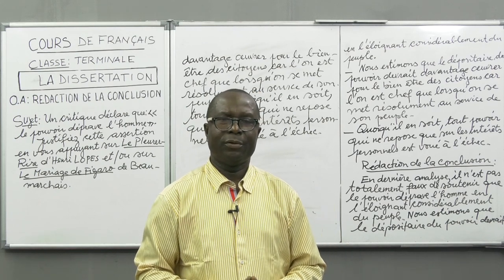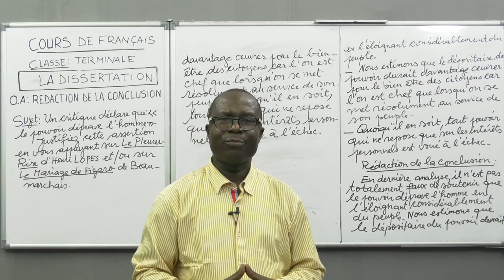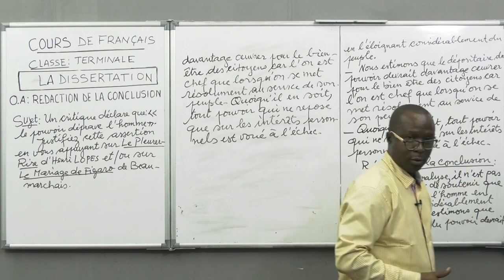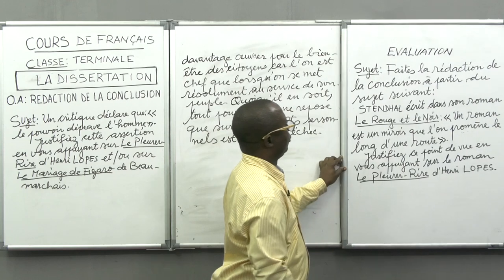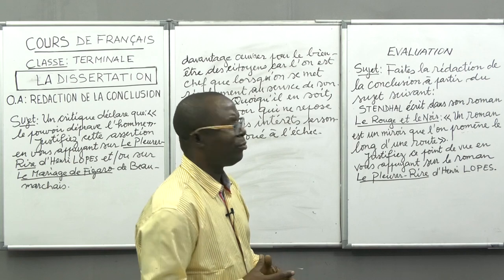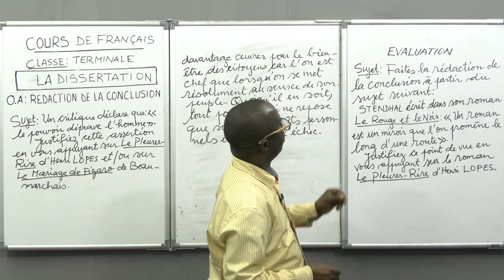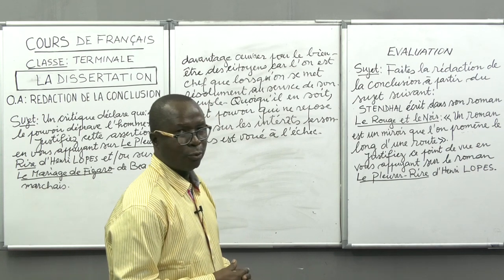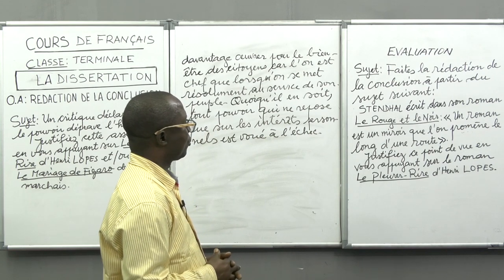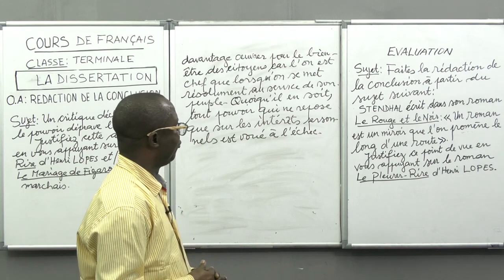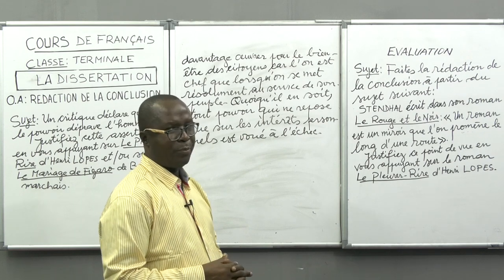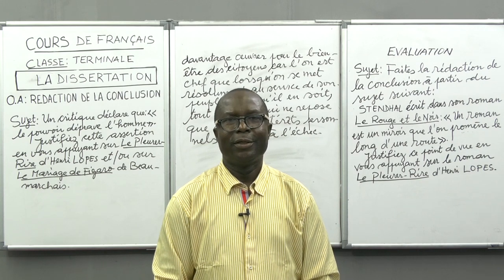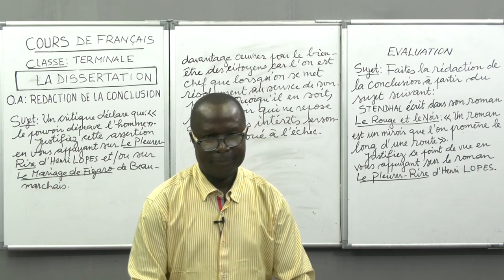Nous sommes arrivés à la fin de notre séance de ce matin, mais nous n'allons pas vous laisser comme ça. Chacun doit poursuivre l'effort à la maison. Je vous propose le sujet suivant : faites la rédaction de la conclusion à partir du sujet suivant : « Stendhal écrit dans son roman Le Rouge et le Noir : 'Un roman est un miroir que l'on promène le long d'une route.' Justifiez ce point de vue en vous appuyant sur le roman Le Pleurer-Rire d'Henri Lopez. » Merci de m'avoir suivi, à bientôt.